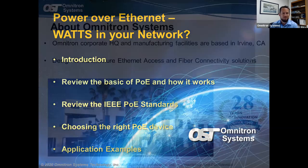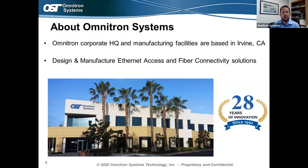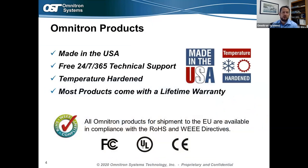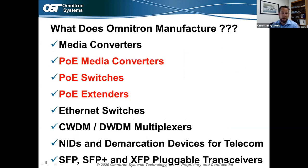A little about Omnitron Systems: we're headquartered in Irvine, California, and we're a manufacturing company — we design, engineer, and manufacture all of our own products. Everything is made in Irvine, California. We've been in business since 1992, celebrating 28 years in business. All our products are made in the USA, they're TAA compliant, and we provide free 24/7 tech support.